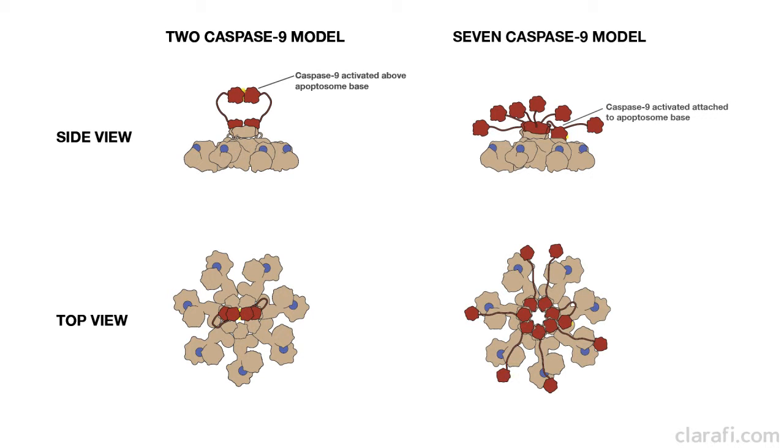In another theory of caspase 9 activation, up to seven caspase 9 molecules are able to bind to the apoptosome at one time, creating an APAP1 caspase 9 card-card ring.